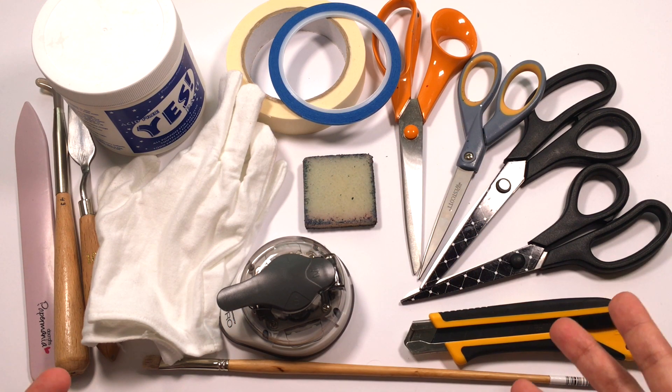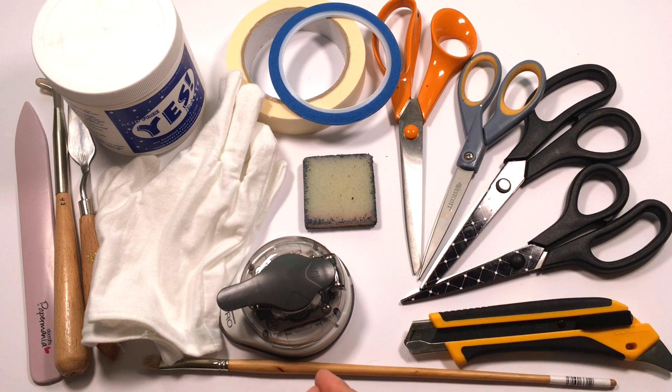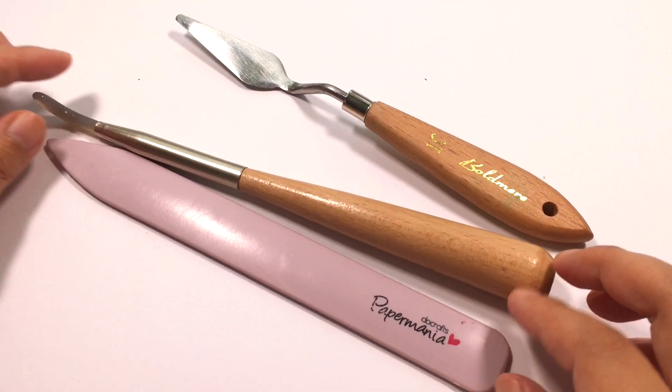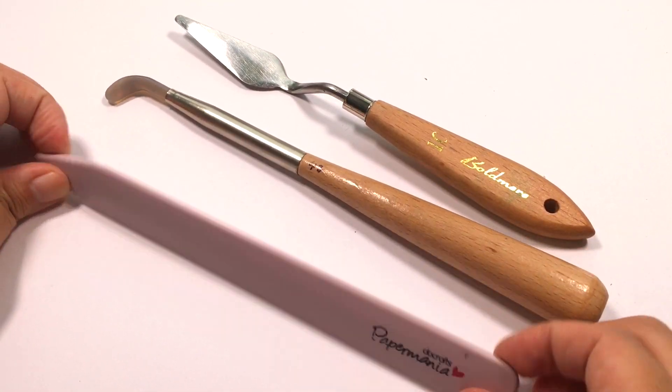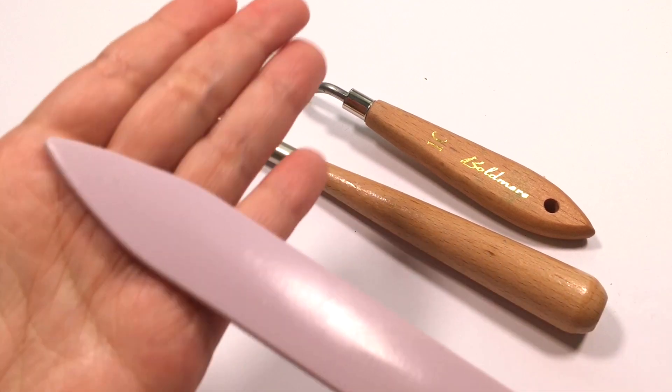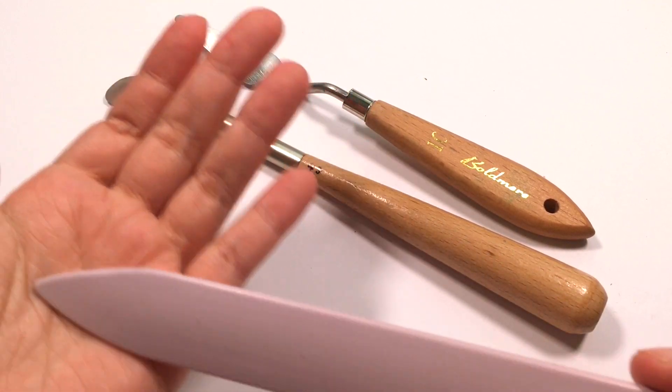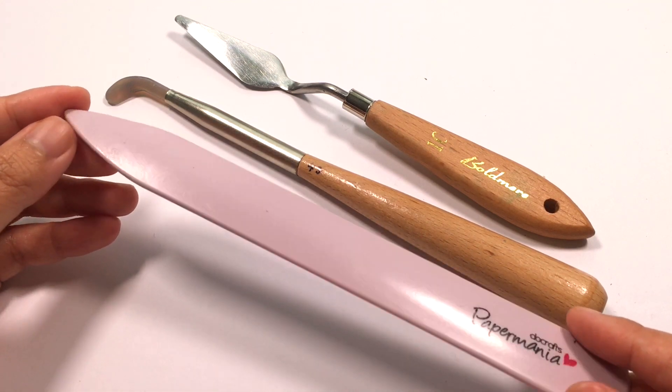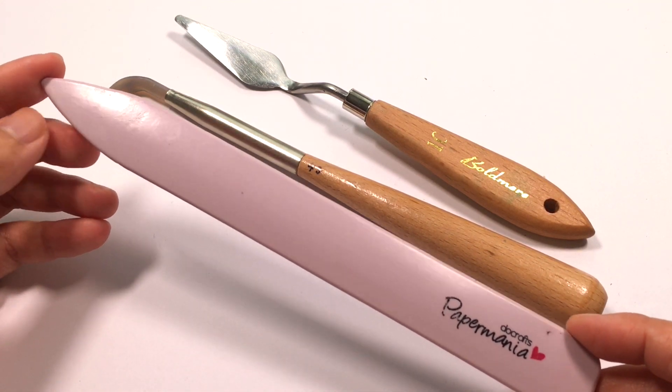This is the second part where I show you the peripheral tools that aren't necessarily art supplies but are incredibly useful in my art practice that I just cannot live without. First up are some hand tools. Now this one is a bone folder, and it's a very well-used bone folder as you can see.